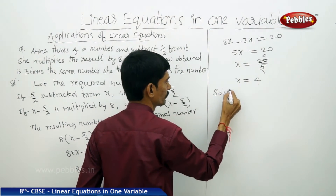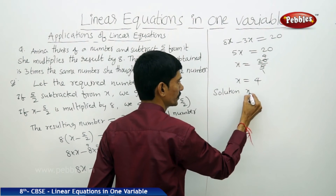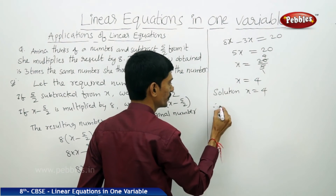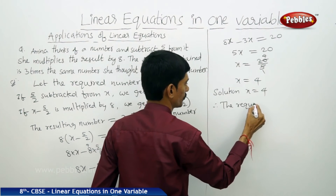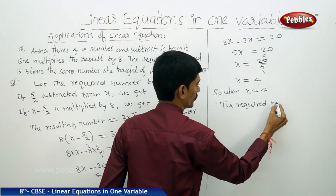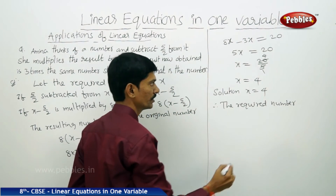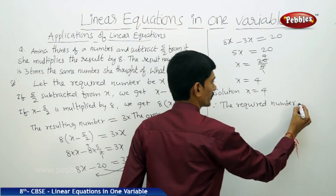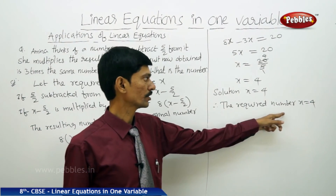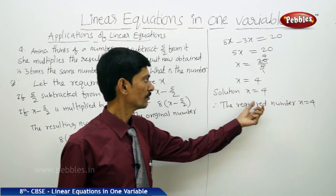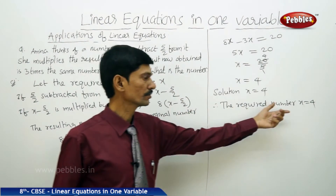The solution of the linear equation is x equals to 4. So the number that Amina thought of is 4.